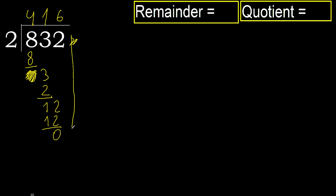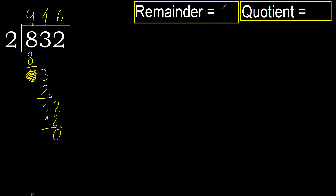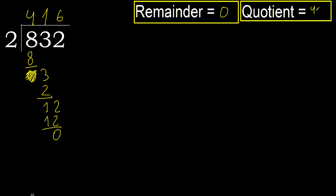There is no next number, therefore finish it. Therefore 832 divided by 2 is 416.